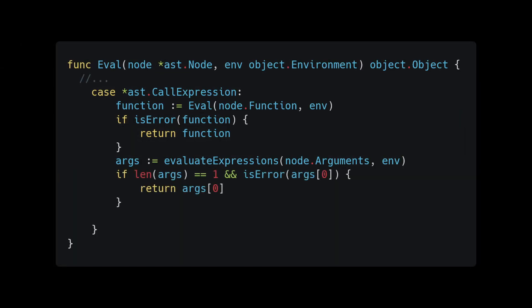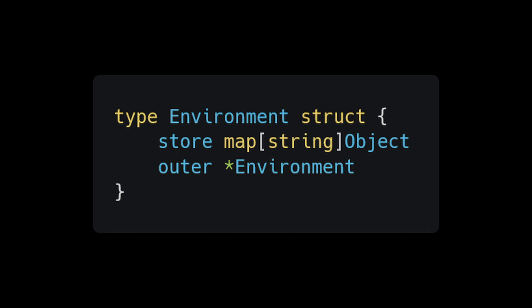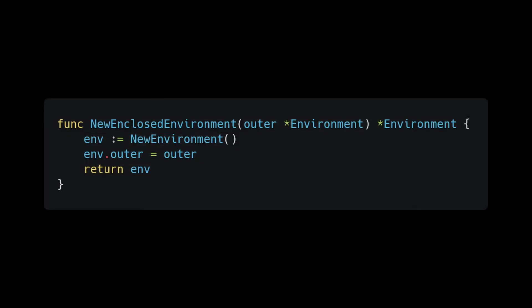Once we have the results, do a quick check to ensure there are no errors in our arguments. All that's left is to extend our current environment so the function can run free without overriding our existing environment. To do this, add a new variable to our environment object called outer, which represents the environment this environment is nested inside of. Then create a function called new_enclosed_environment that takes an existing environment as a parameter, calls our constructor, and populates the outer field with the environment passed in.